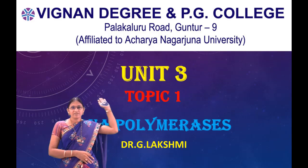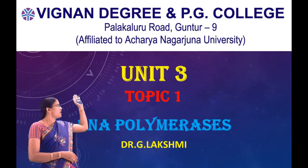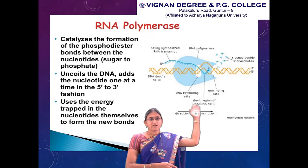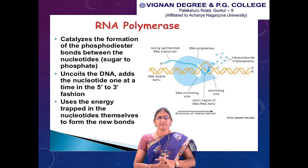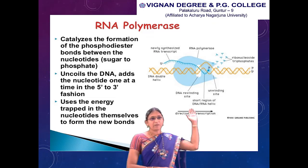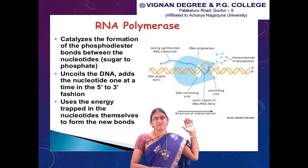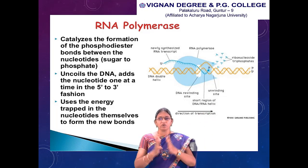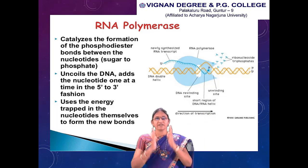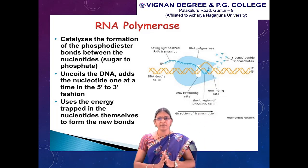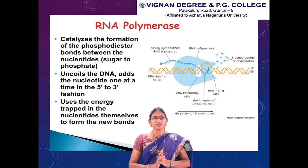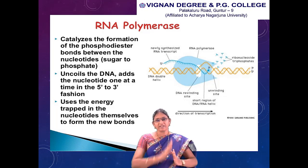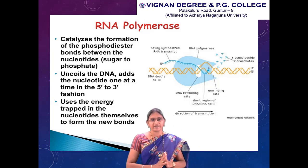One of the main enzymes for transcription is RNA polymerase. RNA polymerase catalyzes the formation of phosphodiester bonds between the nucleotides. The function of RNA polymerase is to form the phosphodiester bond between the nucleotides and to polymerize the nucleotides.